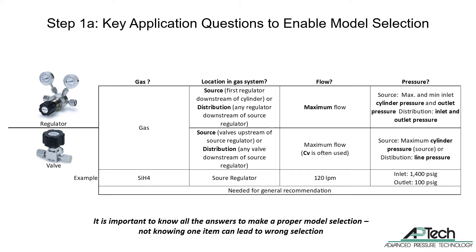Now let's review the items needed to enable basic model selection. These are the gas, location in the gas system, and flow. Pressure or pressures are required to ensure a proper selection and to work with the factory. The gas should include concentration percentage if it is a mixture. Determine location in the gas system: a regulator is a source application if it is the first regulator downstream of a cylinder or bulk gas storage system. It is a distribution regulator if it is downstream of the source regulator. Maximum flow rate will determine the flow capacity needed.